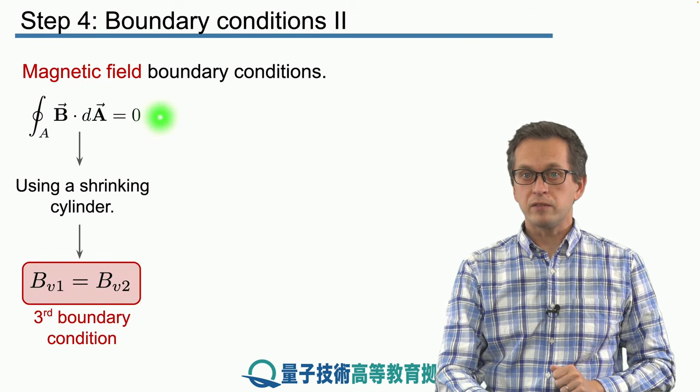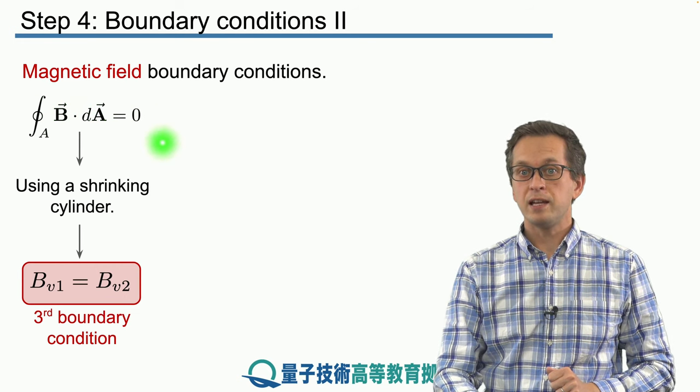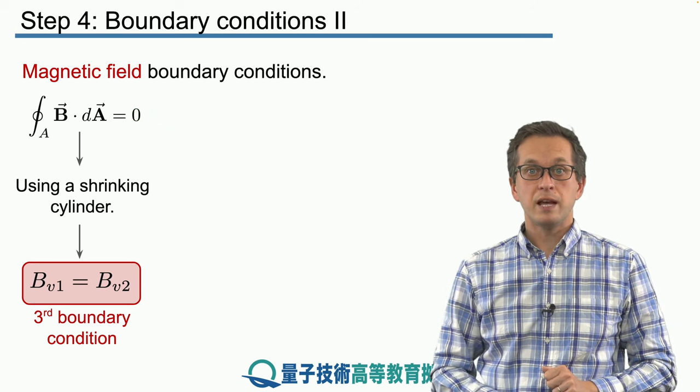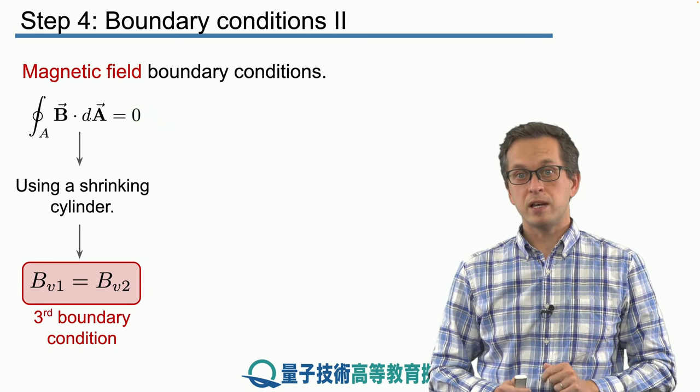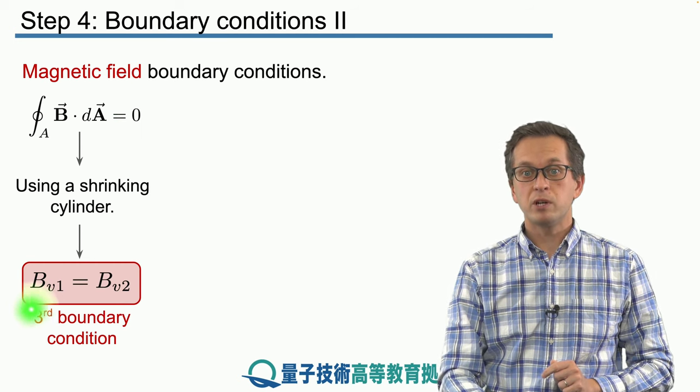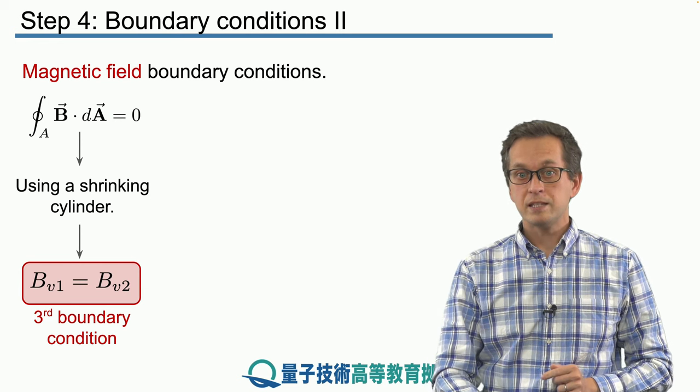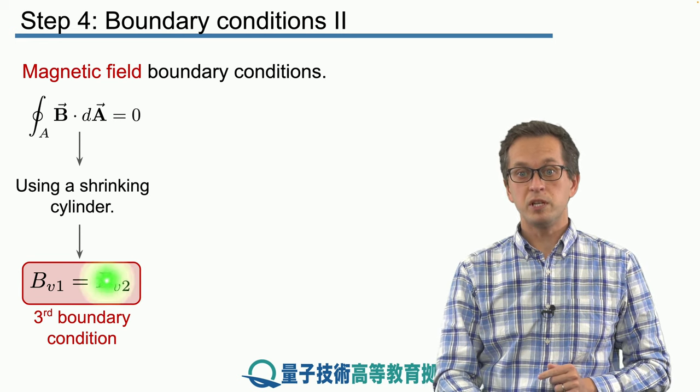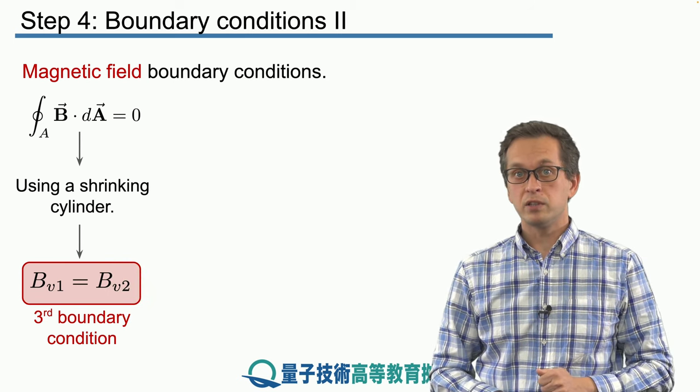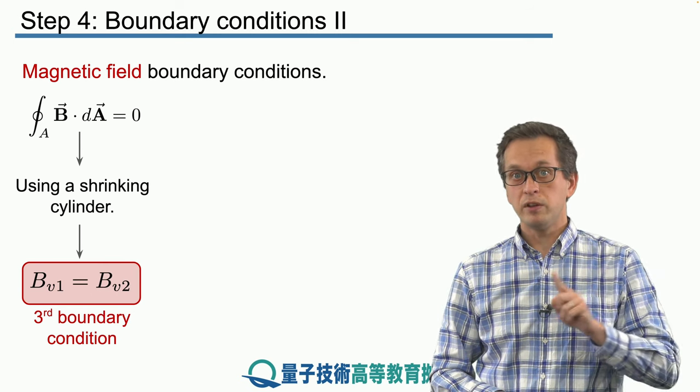But, previously, for the electric field, we had a finite right-hand side. And we know that there is no such thing, at least in classical electrodynamics, as magnetic monopoles. Therefore, the right-hand side is equal to zero. So, the boundary conditions for the vertical component of the magnetic field is very simple. Bv1 is equal to Bv2. In other words, the vertical component of magnetic field does not change as the electromagnetic wave travels from dielectric 1 into dielectric 2.